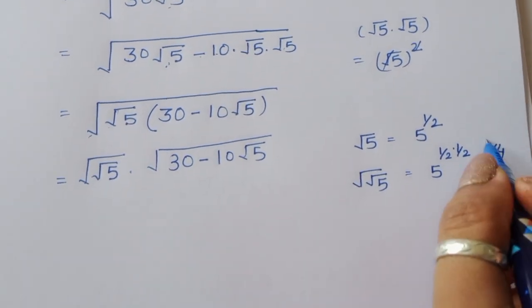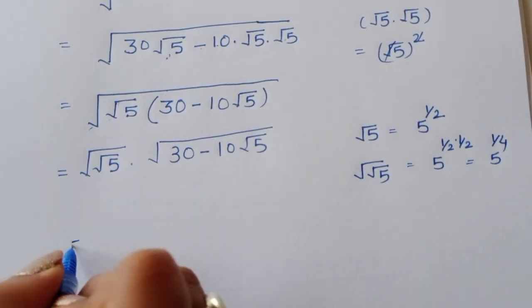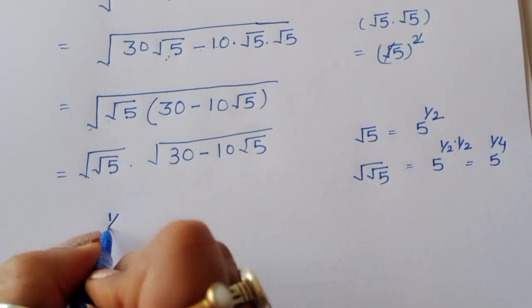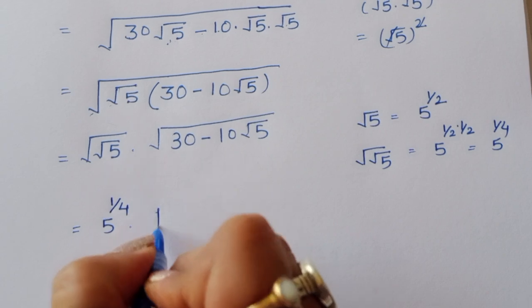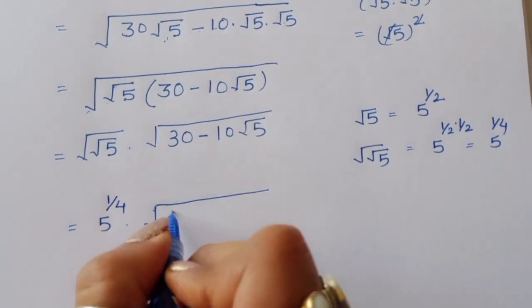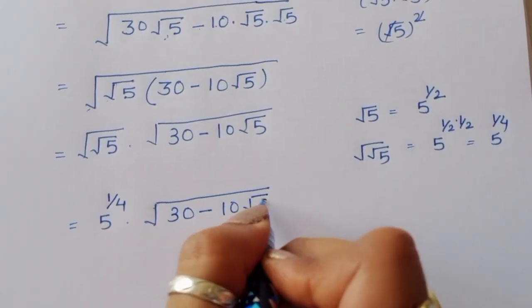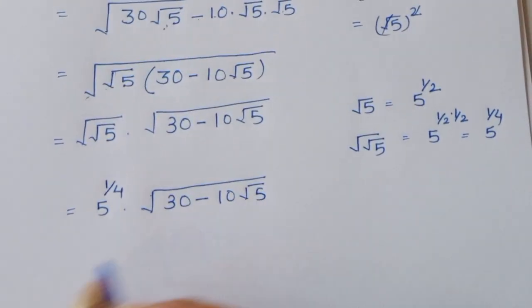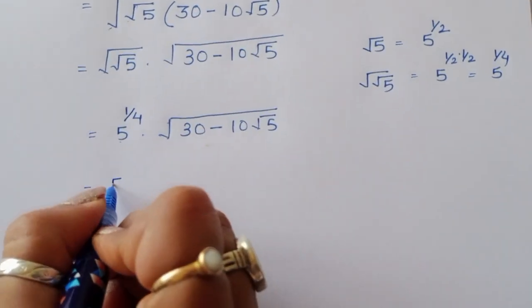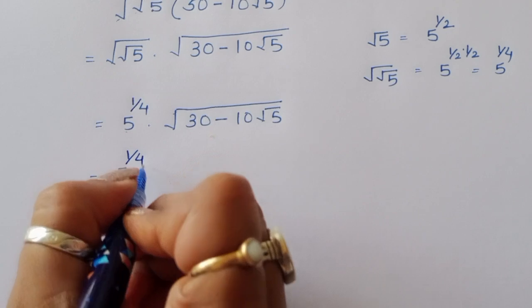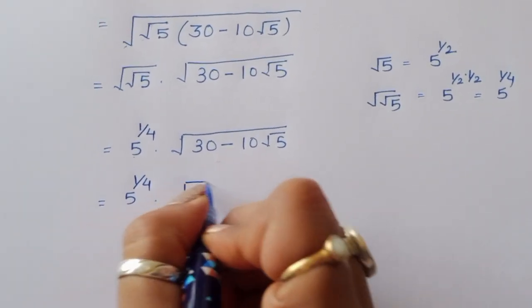So we can write 5^(1/4) times square root of (30 minus 10√5). Now we need to simplify the expression inside the square root.